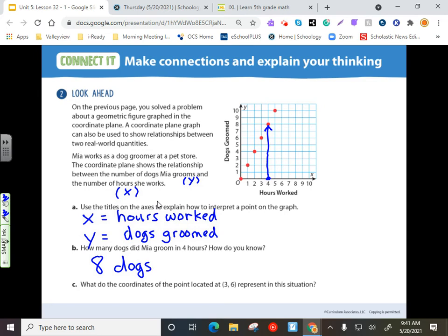What do the coordinates of the point located at three, six represent in this situation? Let me switch colors. Three, six. All right. That shows that Mia groomed six dogs in three hours. And if we want to get really technical, we could also see that basically the rate that she does dogs here for grooming is for every hour she can groom two dogs. Because that's this line shows a nice consistent rate. So, she's always pretty steady with however many dogs she can get done in that amount of time.